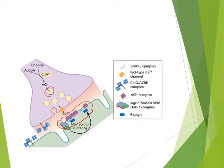In myasthenia gravis, the fundamental defect is a decrease in the number of available receptors. The antibodies first block the receptor, then cause damage and flattening of the post-synaptic membrane, resulting in decreased efficiency of neuromuscular transmission. Although acetylcholine is released normally, it produces small end-plate potentials that may fail to trigger muscle action potentials. Failure of transmission at many neuromuscular junctions results in weakness of contraction.